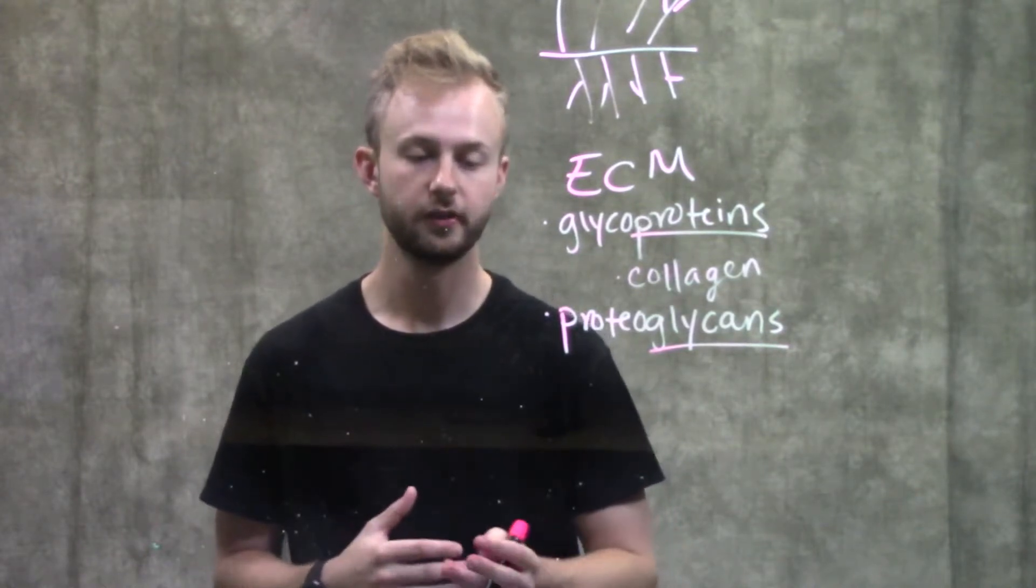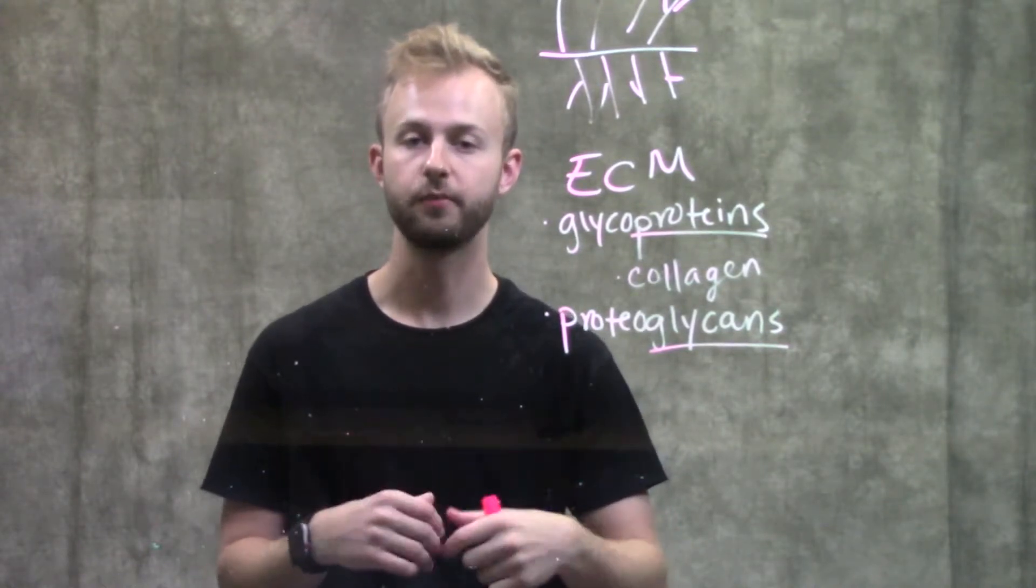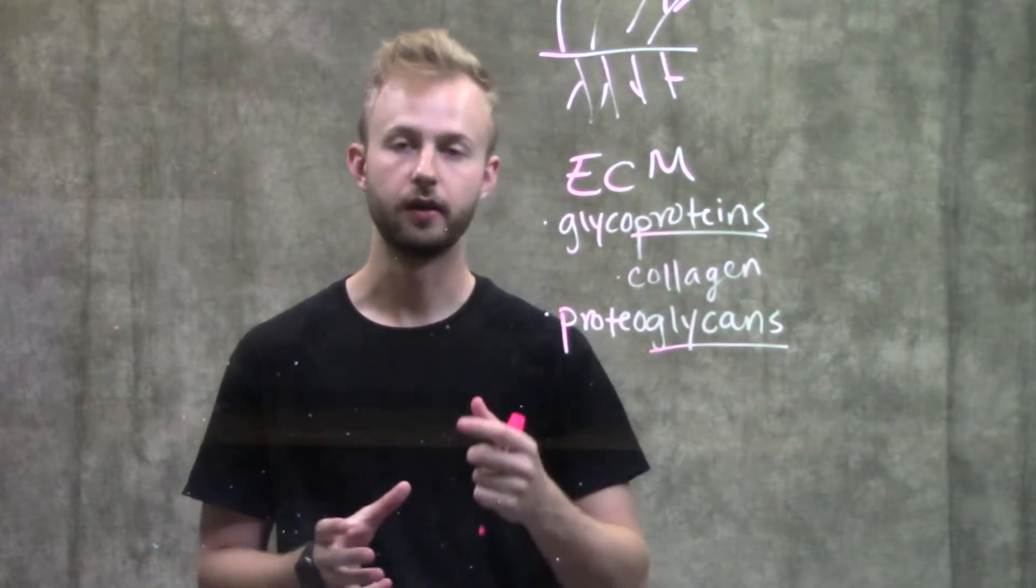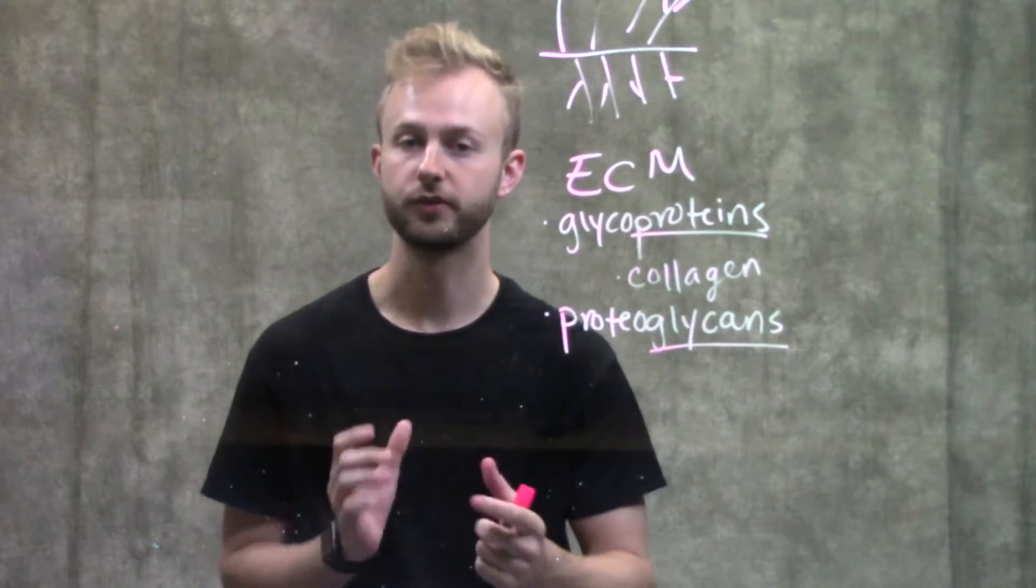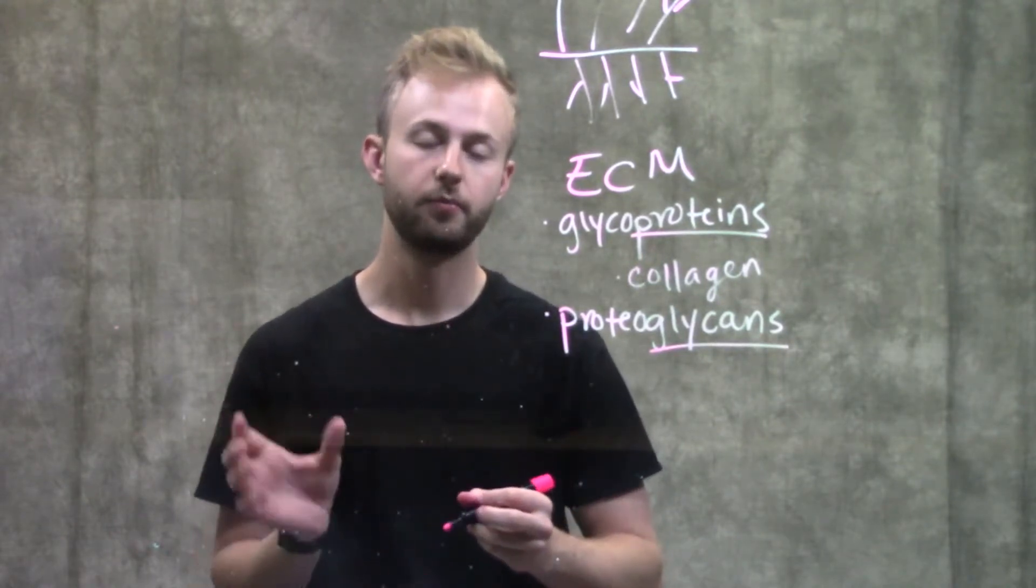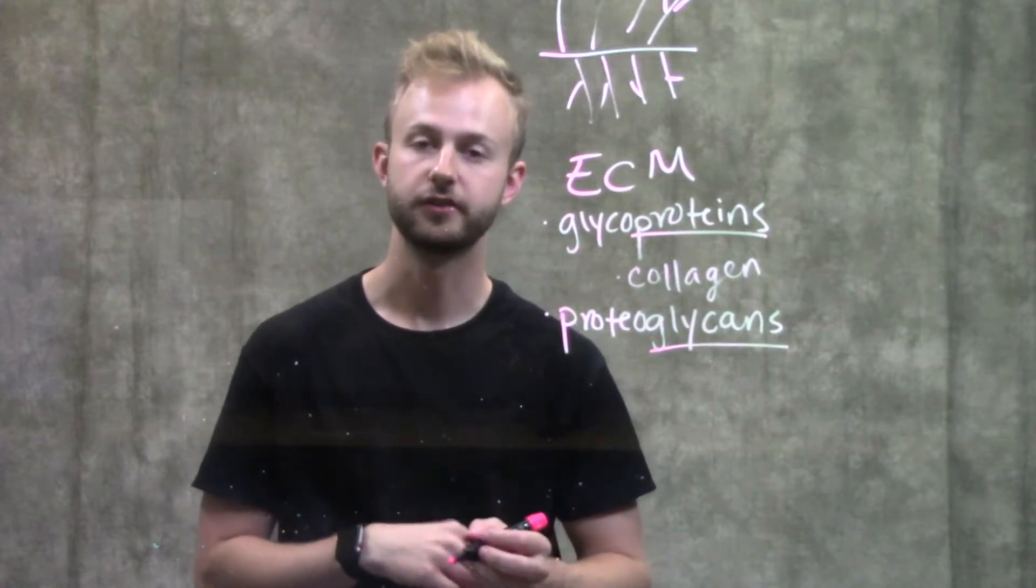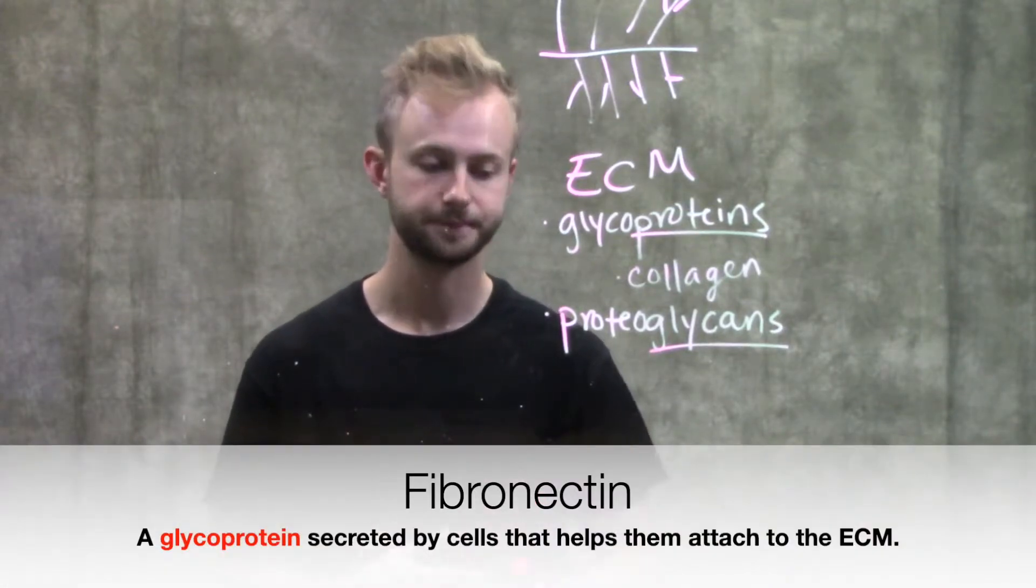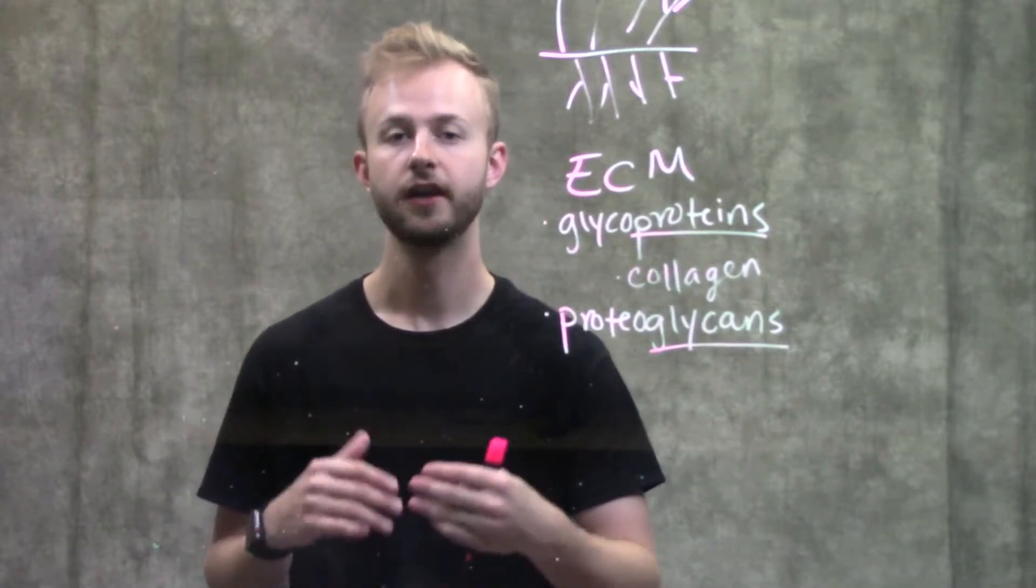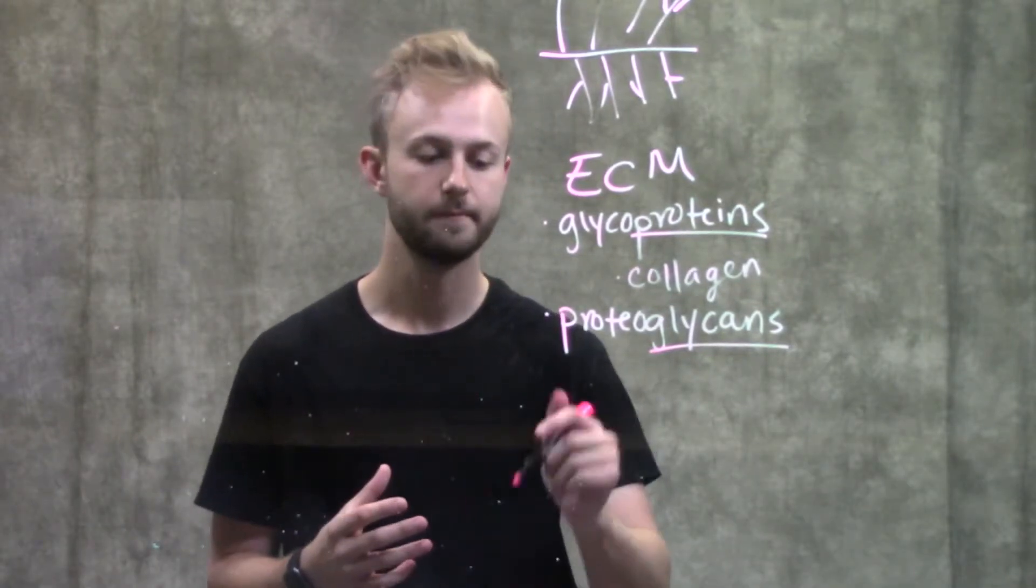The way that we're able to actually interact with the extracellular matrix is through different cellular receptors on the surface of our cells. Another important component of the extracellular matrix is a molecule called fibronectin. That's a protein molecule, and it's really important for cell migration and other things like that.